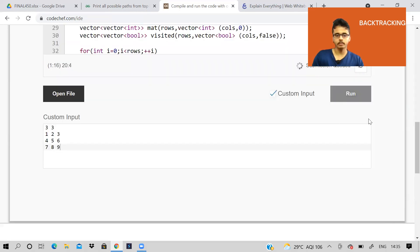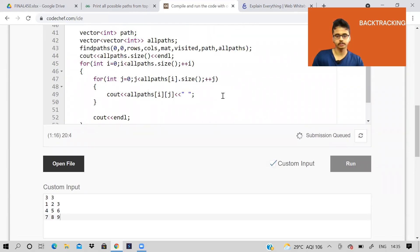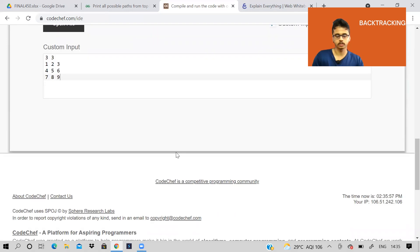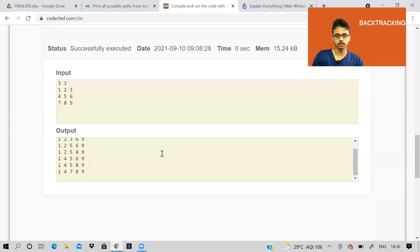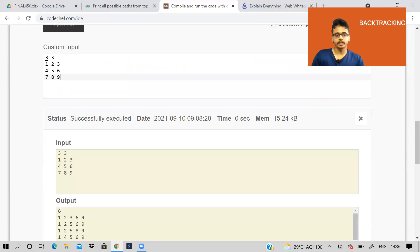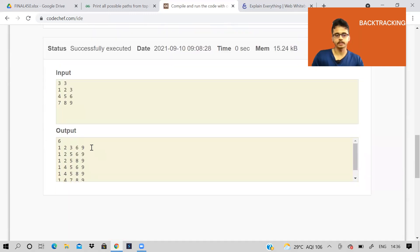So output will come like this. I have put 3 cross 3 matrix: 1, 2, 3, 4, 5, 6, 7, 8, 9. So it is printing all the paths. You can take right or down only.